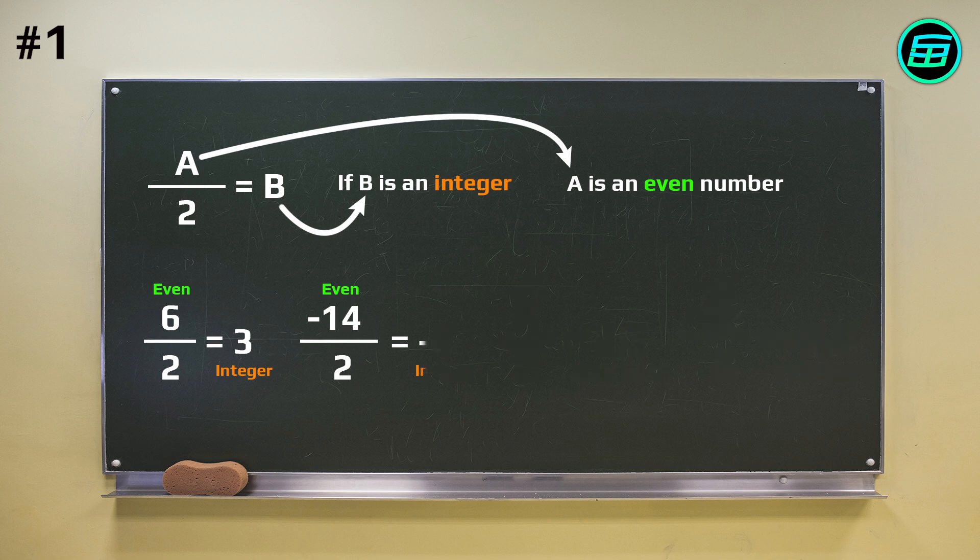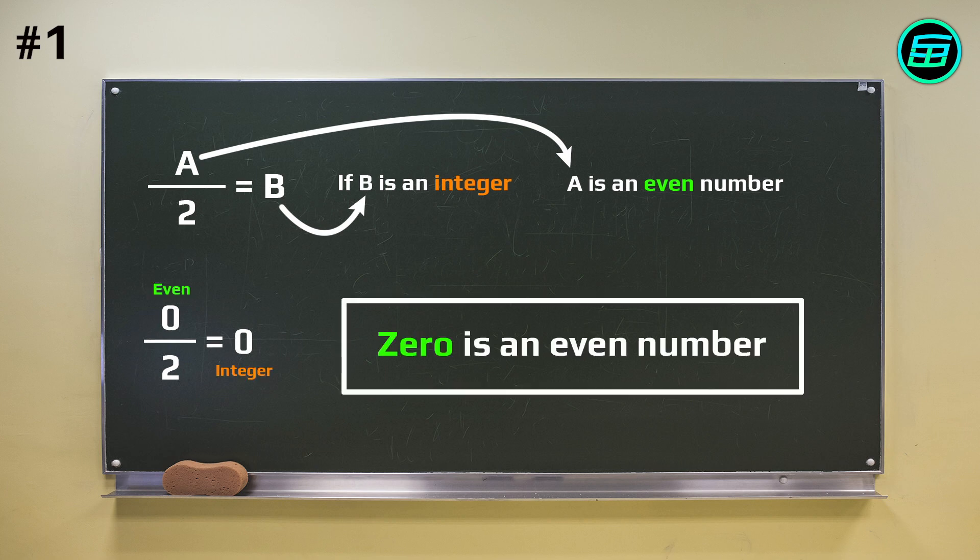If we divide 0 by 2, the result is 0, an integer. Therefore 0 is an even number.